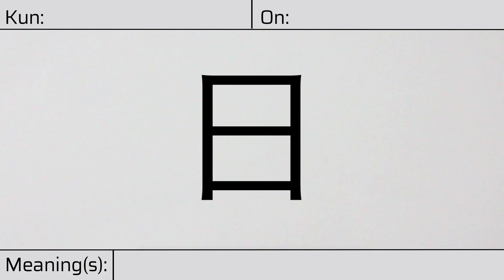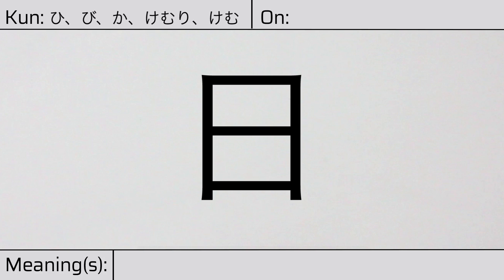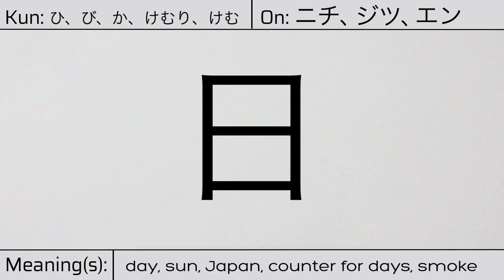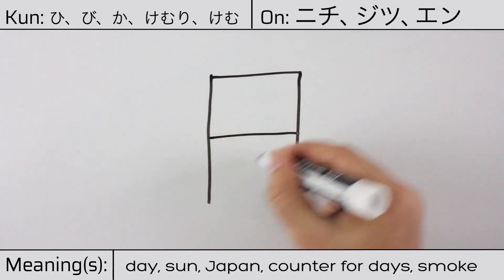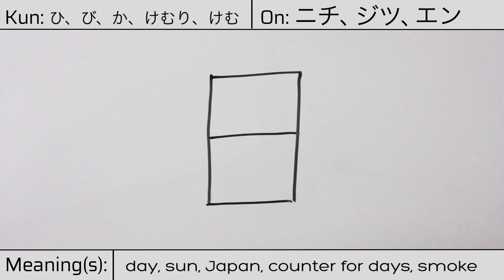Welcome to this lesson on Japanese kanji. Today, we'll be discussing this character. This kanji has kunyomi or Japanese readings of hi, bi, ka, kemuri, or kemu, and it has onyomi or Chinese readings of nichi, jitsu, or en. This character has the meanings day, sun, Japan, counter for days, or smoke. Here is the stroke order. This character has no radicals, but is itself a radical in many composite kanji.